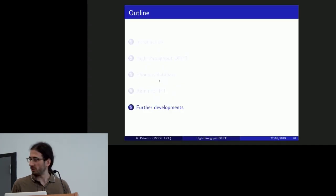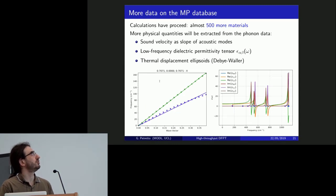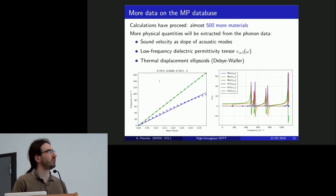And I would like to spend the last minutes mentioning some further developments that are maybe related with tools available in ABiPy. The first thing is that there are already more or less 500 other phonon band structures that should be uploaded on the Materials Project at some point, hopefully sooner than later. And we will also add some post-processed quantities like the sound velocity, frequency-dependent dielectric tensor, and the thermal displacement ellipsoid. All this post-processing are already available in ABiPy, so in principle you can calculate it yourself if you wish.